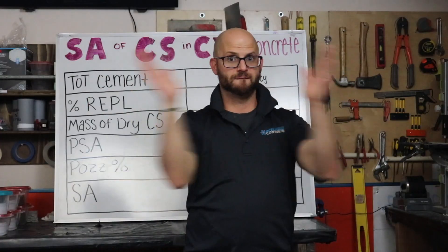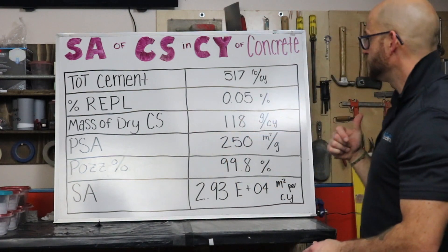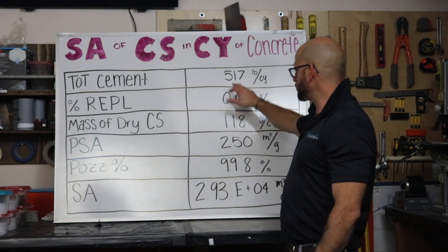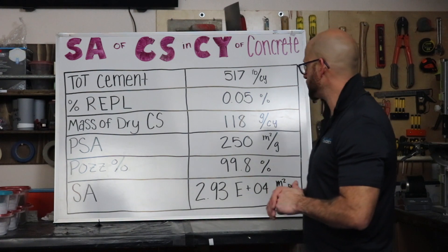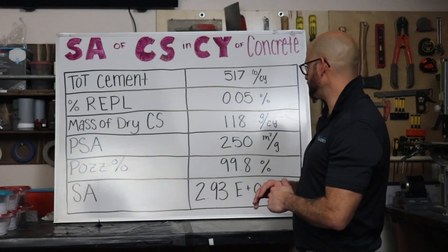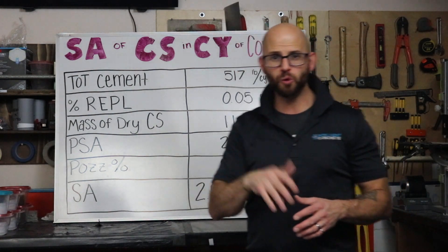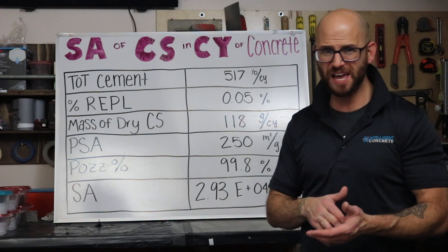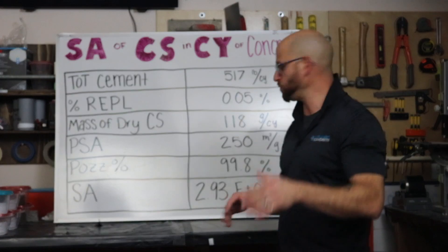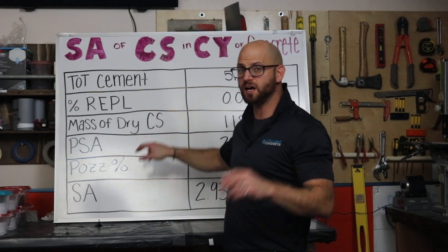Now let's work through numbers using those formulas and variables. Our total cementitious is 517 pounds per cubic yard, and we want to use 0.05% of this colloidal silica dispersion. Multiplying 517 pounds per cubic yard by 0.05% gives 0.26 pounds. Then multiplying 0.26 pounds by 453.6 grams per pound gives us 118 grams of dry colloidal silica — not the dispersion, but dry colloidal silica — per cubic yard.